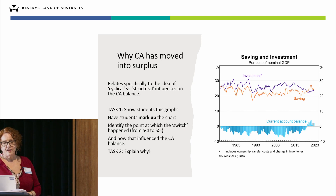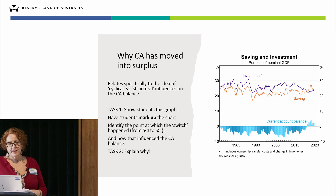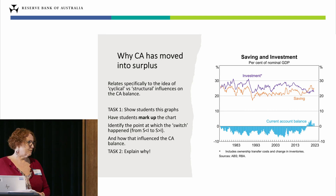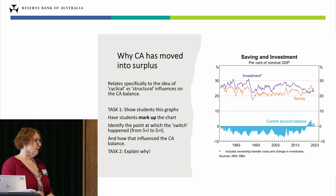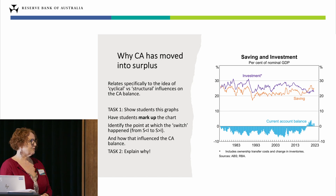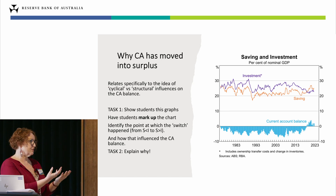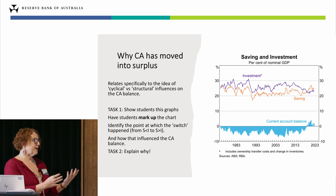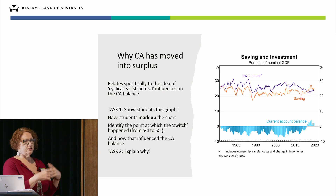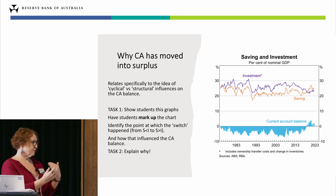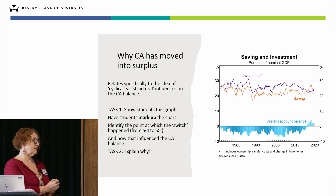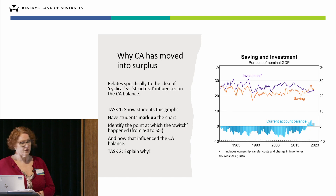I would get students to annotate that chart and ask them to explain why. Tim did a great job of explaining the key features: one being the changes in our trade, and also the changes in our savings versus investment behaviour — the decline in investment since the end of the mining boom and the increase in saving over that period.